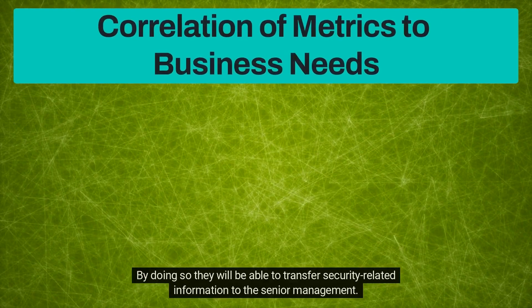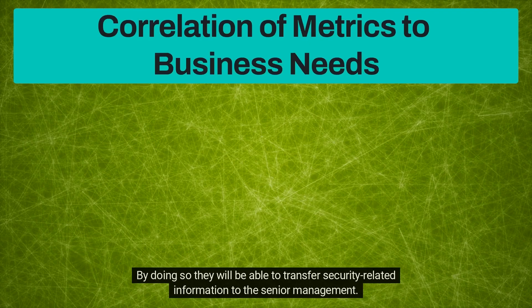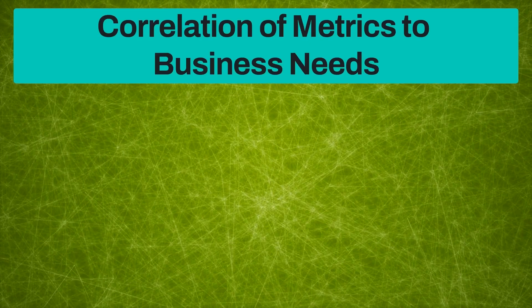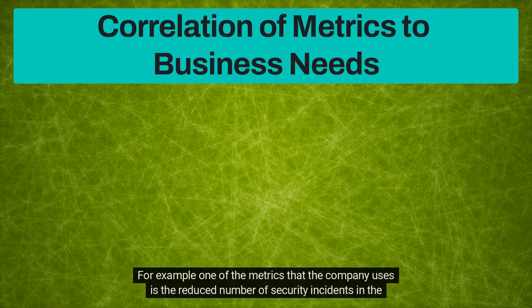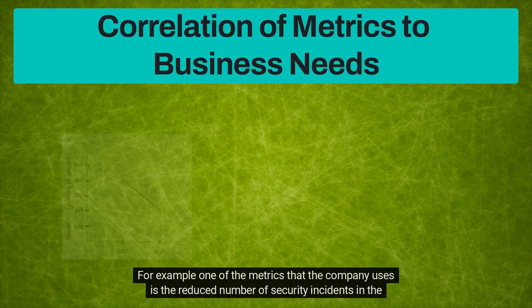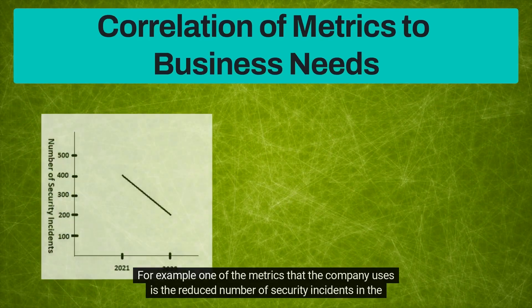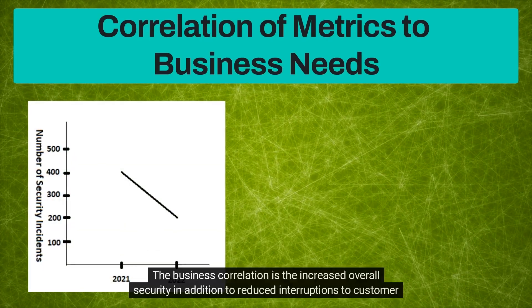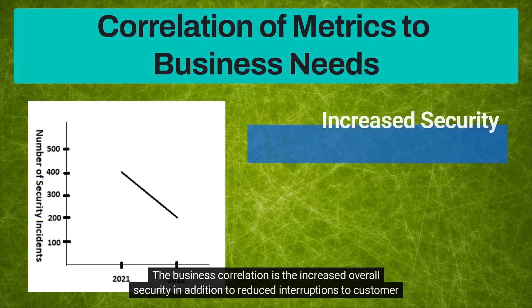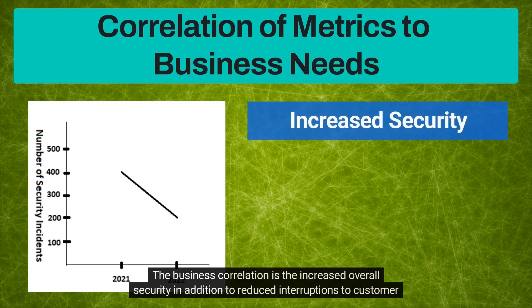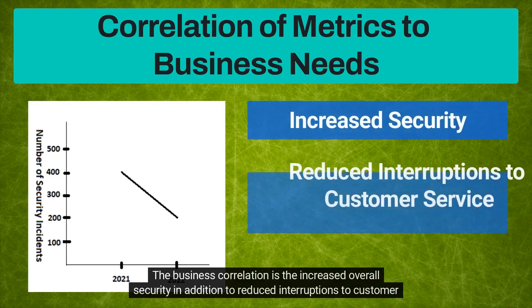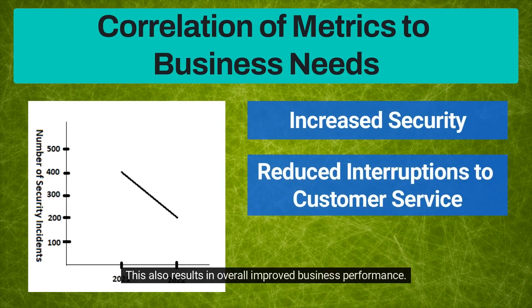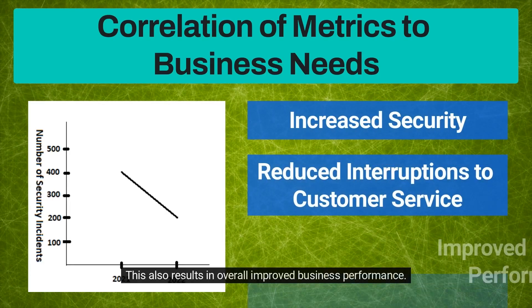It is important that security officers correlate these metrics to the company's business needs. By doing so, they will be able to transfer security-related information to the senior management. For example, one of the metrics that the company uses is the reduced number of security incidents in the last year. The business correlation is the increased overall security in addition to reduced interruptions to customer service time, which also results in overall improved business performance.